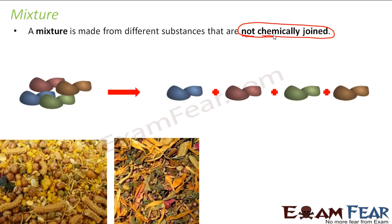For example, if you have different kinds of stones — blue, red, green, brown — you just mix them, it becomes a mixture. And you can separate these stones physically without any chemical reaction. So you have a lot of substances mixed together, they are not chemically joined, and you can separate them without a chemical reaction.